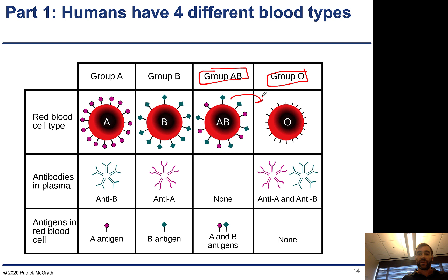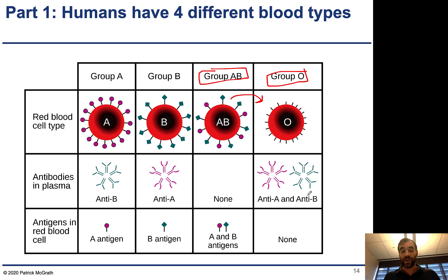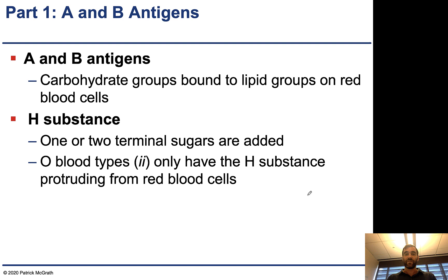If you took AB blood and gave it to an O individual, there would be a problem. That blood has A and B antigens on the surface, and all of the O person's antibodies circulating in the liquid parts of their blood can bind to and recognize those red blood cells, causing serious problems. This is just the phenotype — whether your blood contains antibodies that would recognize different blood cells.